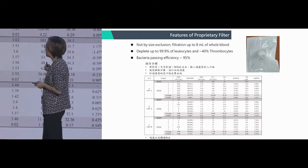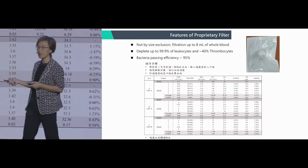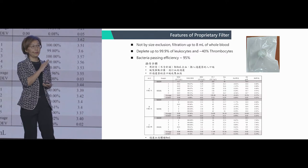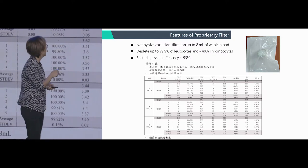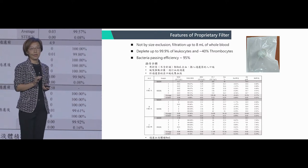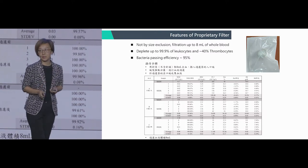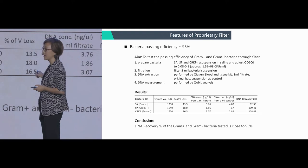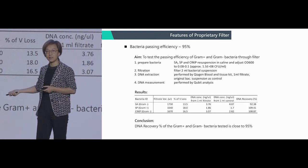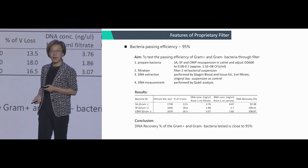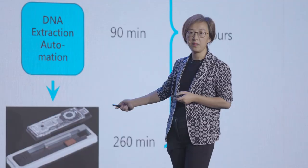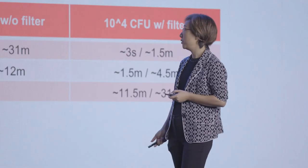For our company, we have a proprietary technology using a membrane. This membrane is not based on size exclusion — it's a surface modification approach, so we can deplete leukocytes very specifically, up to 99.9%. We tested it with bacteria, and most of the bacteria we tested can pass through at over 90%. After this treatment, we can do rapid extraction and rapid ONT sequencing to identify the pathogen.